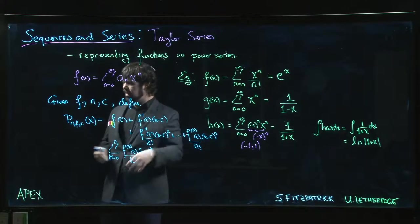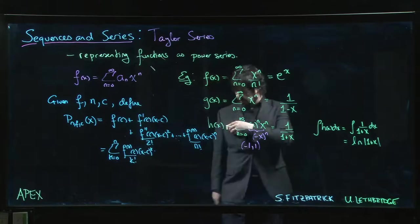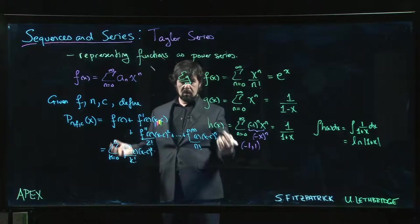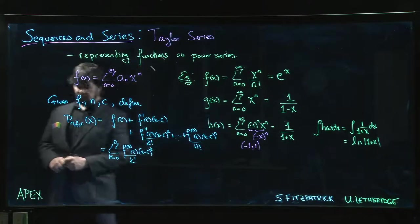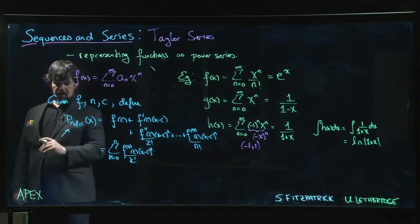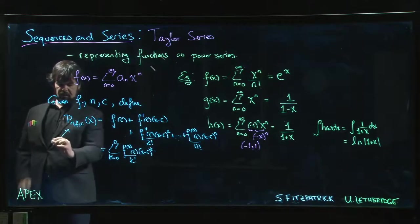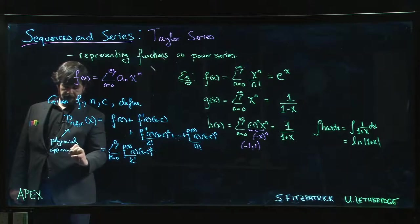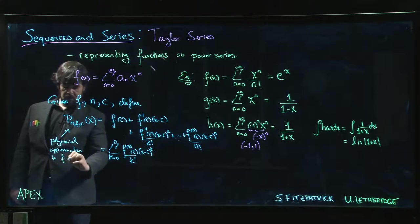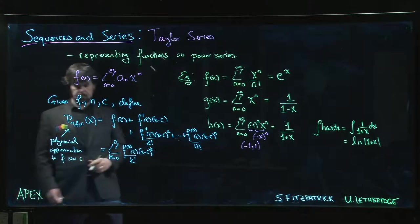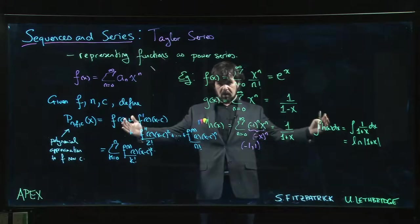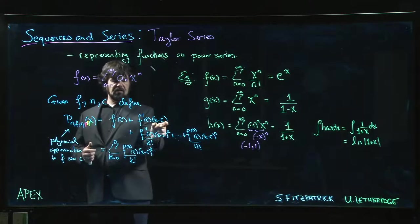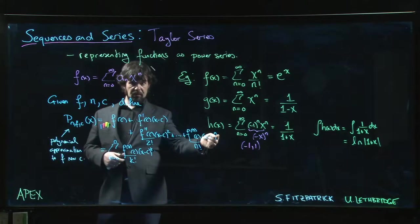When you study Taylor polynomials, one of the things that comes up is that typically as you increase the degree, as n goes up, the approximation gets better. The point of a Taylor polynomial is that it's a very good polynomial approximation to the function f near the point c. The larger the degree gets, the further away from c you can go while still having a good approximation, and the approximation improves basically as this gets smaller or as this gets bigger.